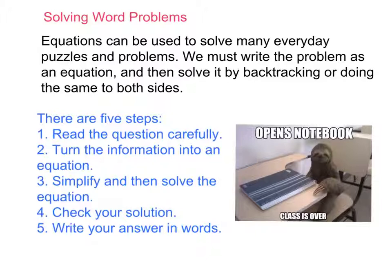There are five steps involved in solving word problems. Step one: read the question carefully and pick out the important information and facts. Step two: turn the information into an equation. Step three: simplify that equation and solve it. Step four: check our solution. Step five: write our answer in words. These are the five clear steps we need to perform when solving word problems.